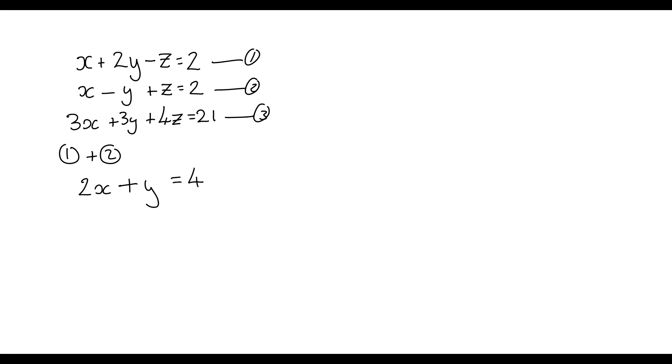So now what I want to do is 4 lots of equation 1 because that will give me minus 4Z plus equation 3 which will cancel with plus 4Z. So 4 lots of X is 4X plus the 3X is 7X.